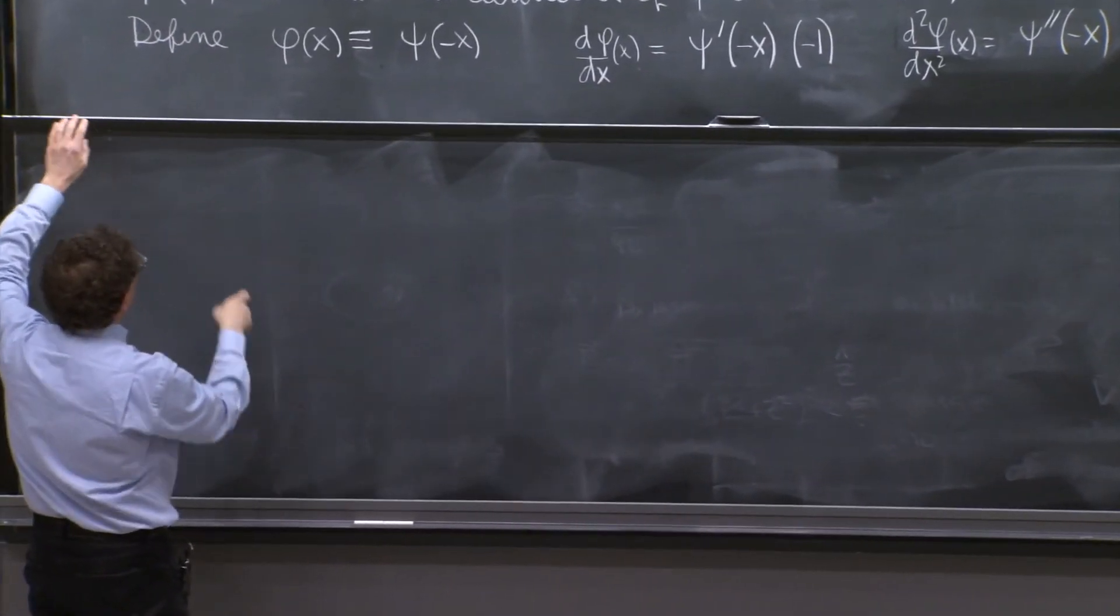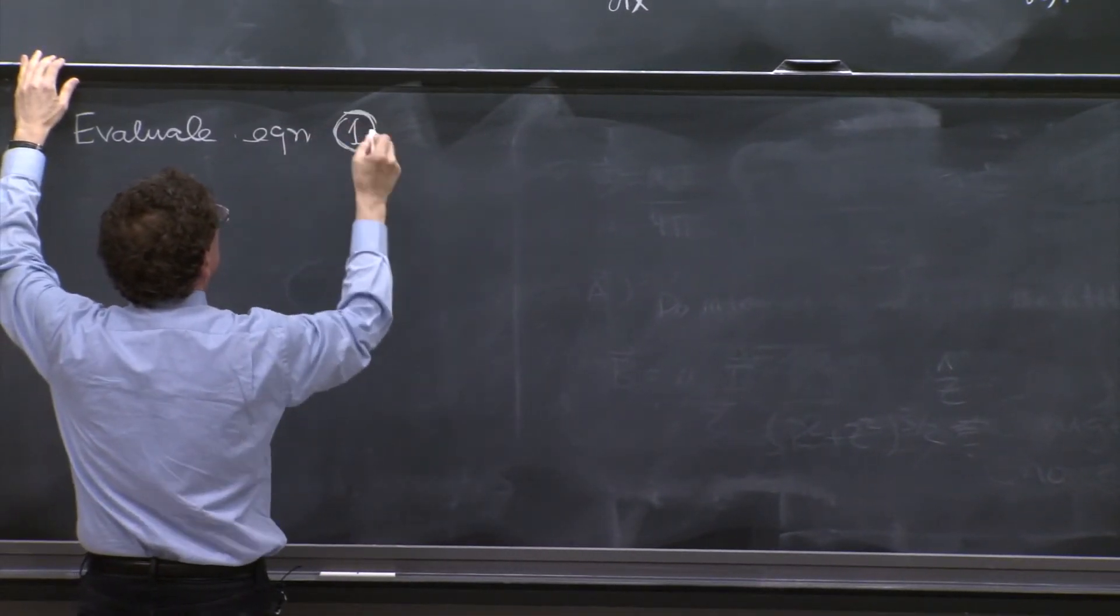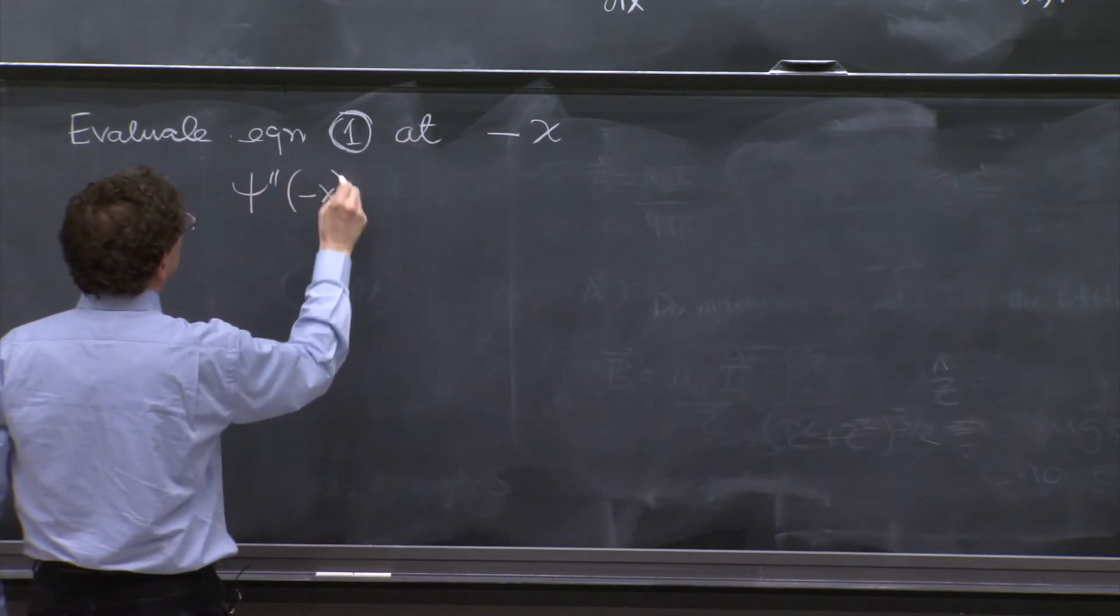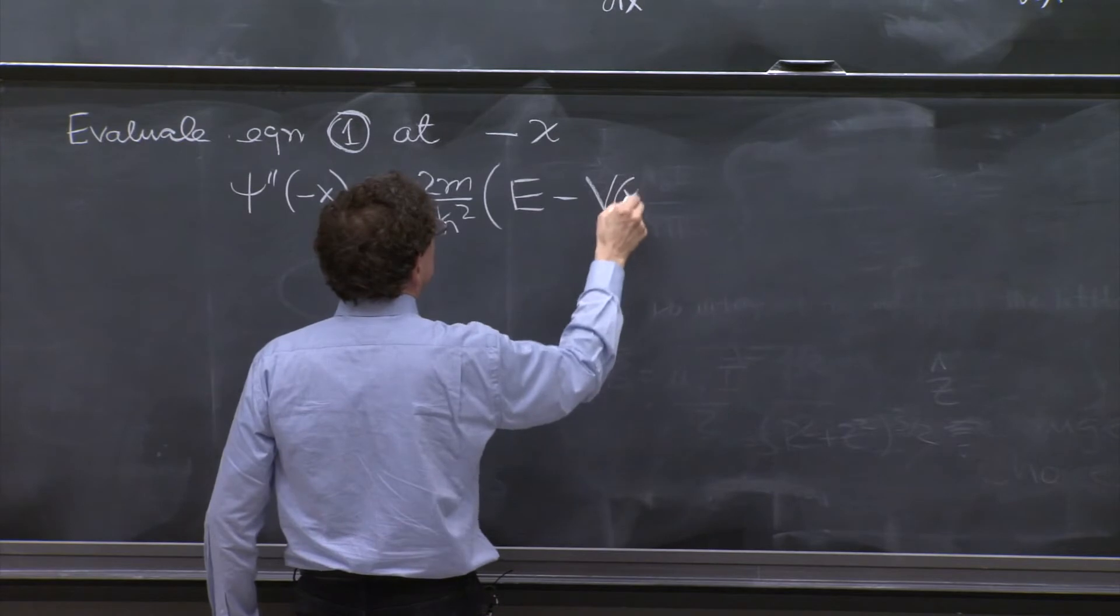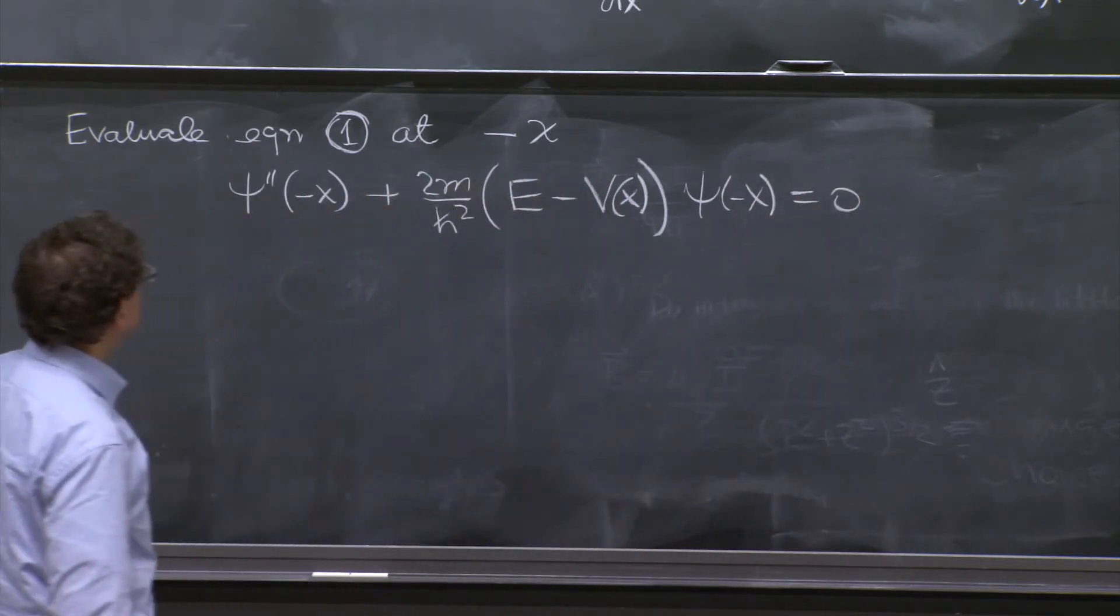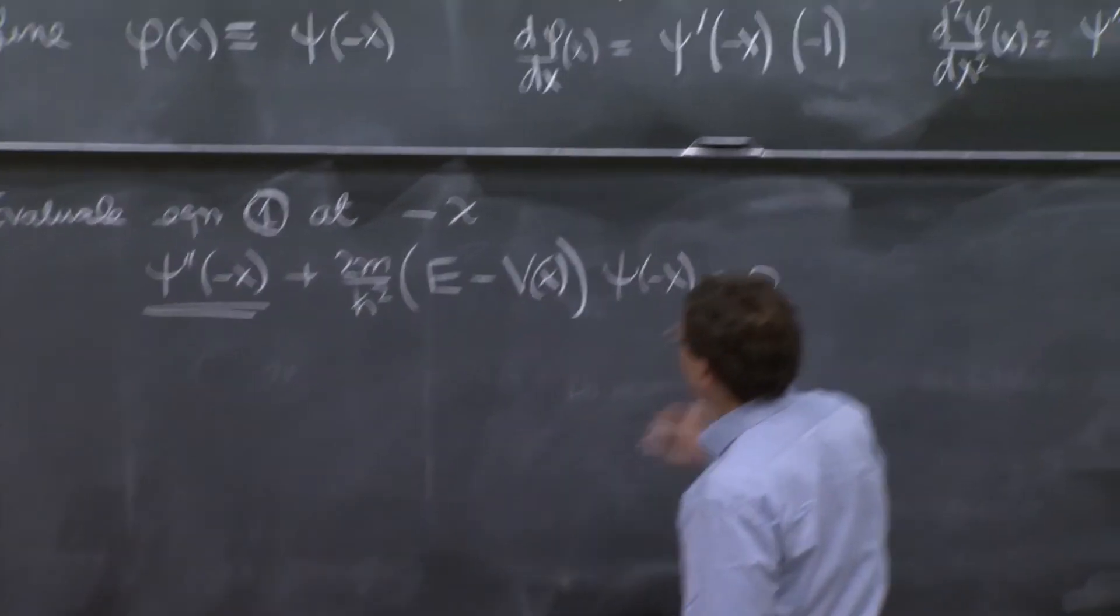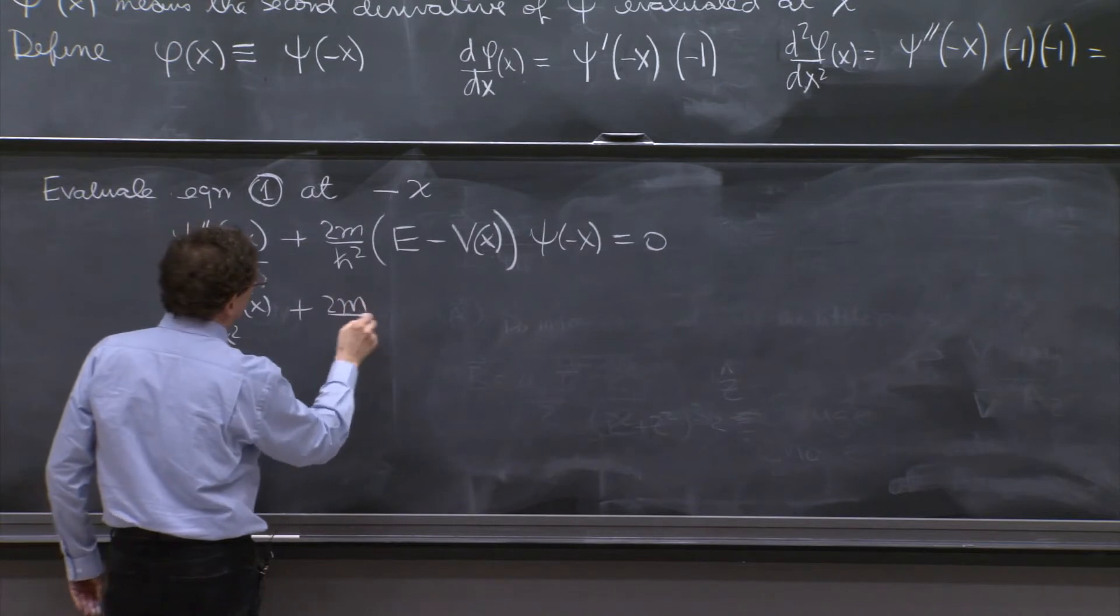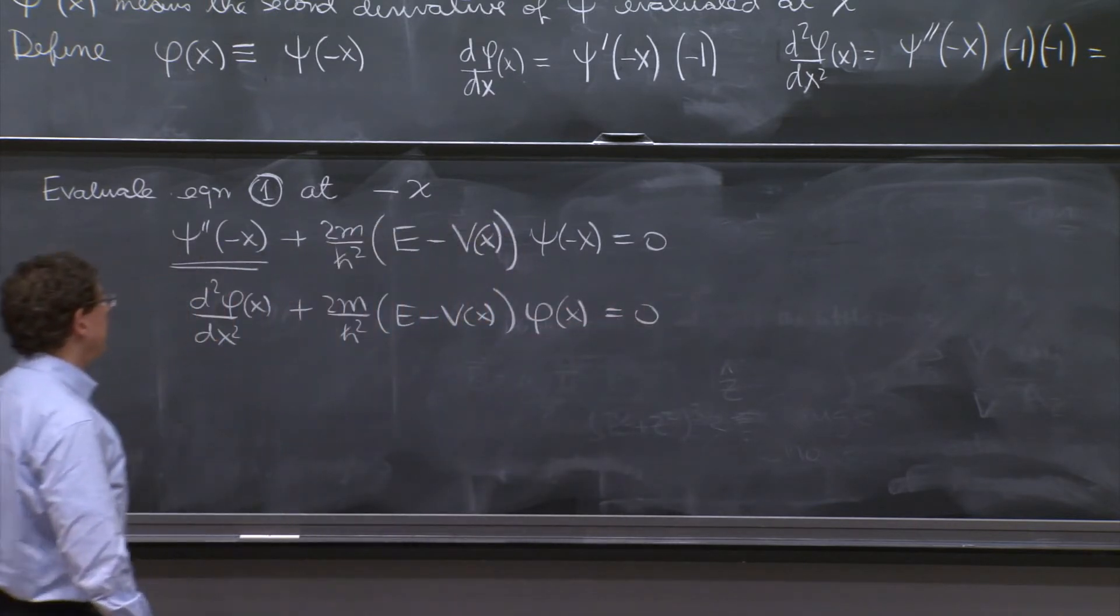Now, evaluate equation 1 at minus x. Well, it would be the second derivative of ψ evaluated at minus x, so it's (2m/ℏ²)(E - V(-x)), but that's the same as V(x), ψ(-x) = 0.